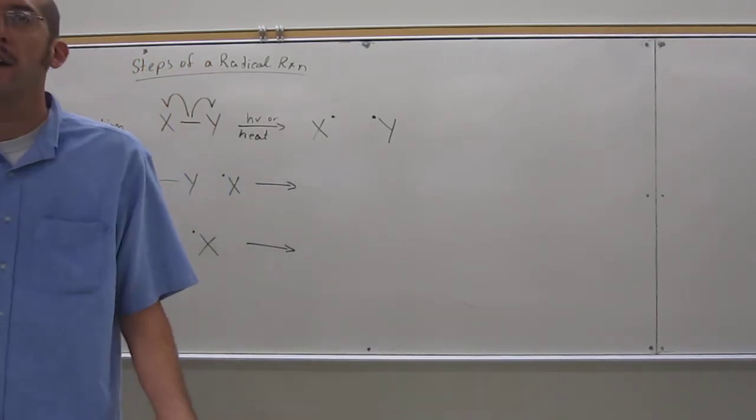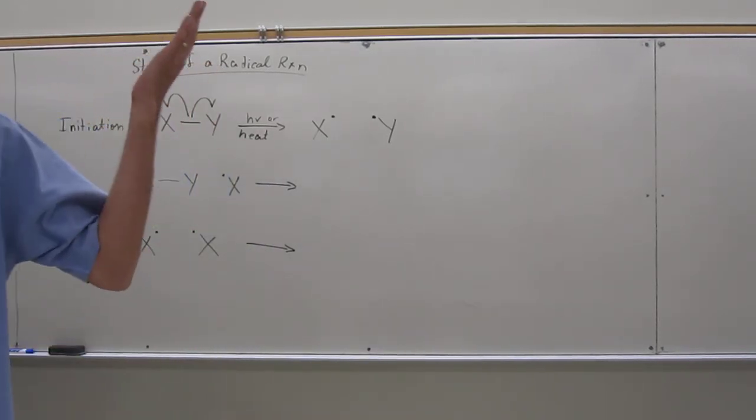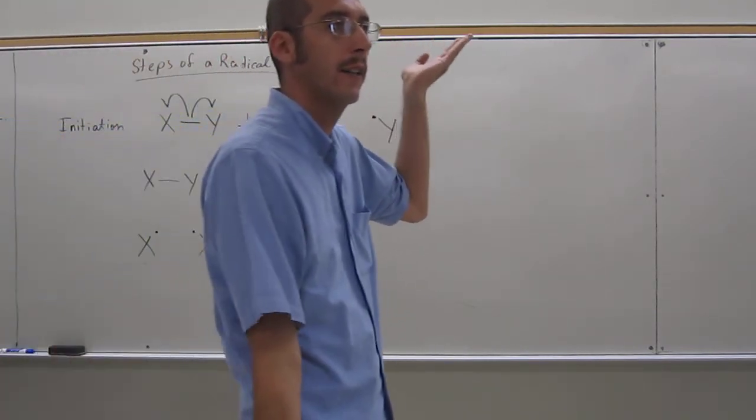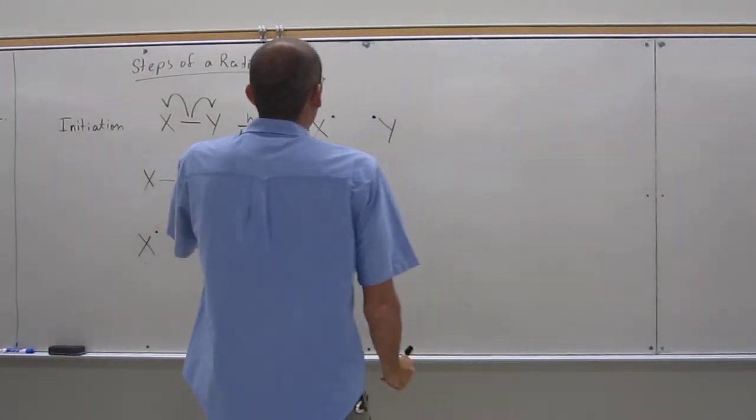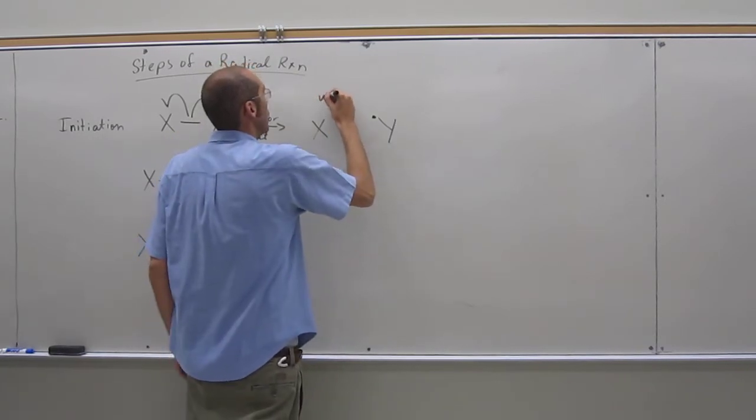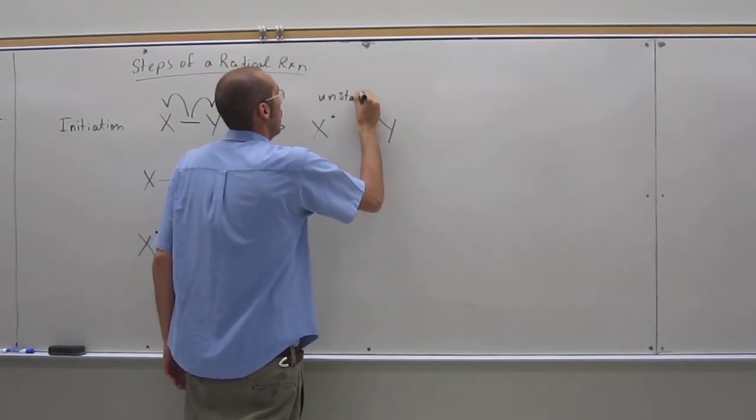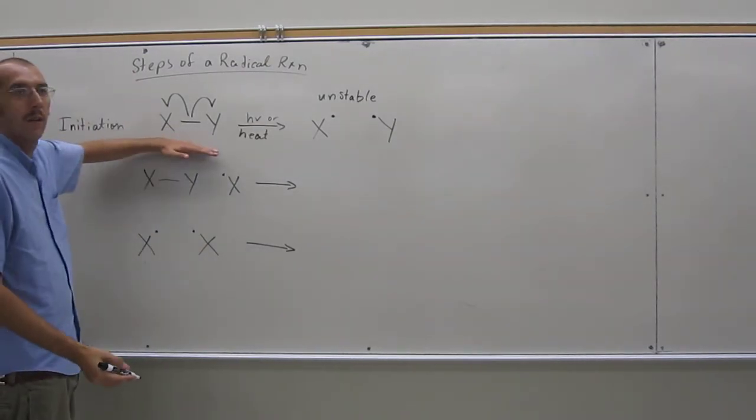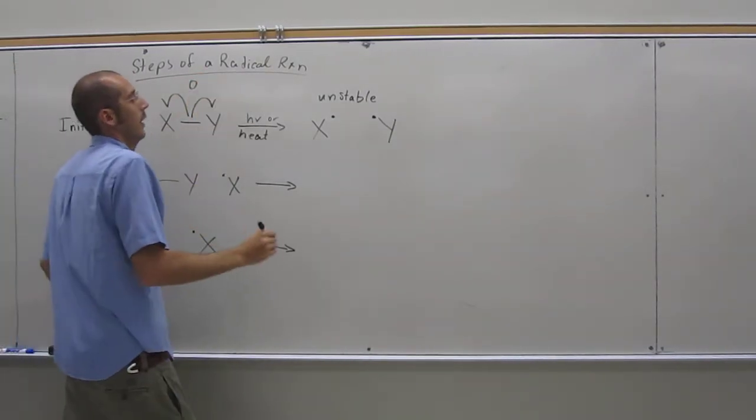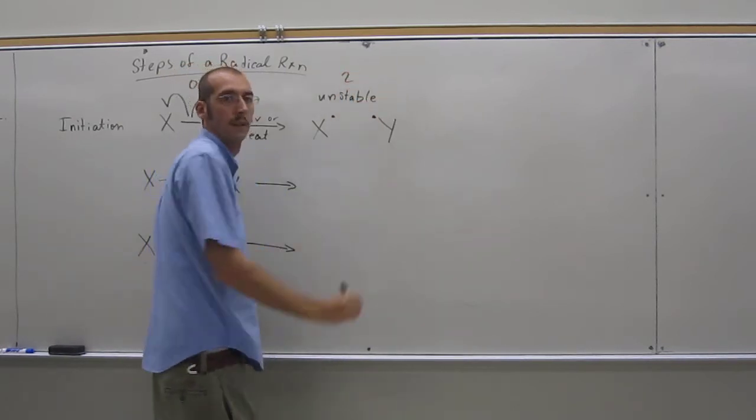If you want to remember the antonyms for chemistry: stability and reactivity, right? So something that's very stable is non-reactive. Something that's very reactive is unstable. So just like Kendra said, very unstable. So how do I know when I have an initiation step? It's when I have zero radicals and I go to two radicals.